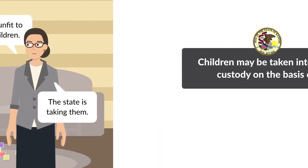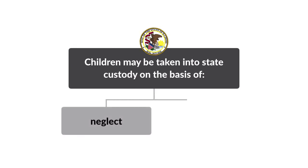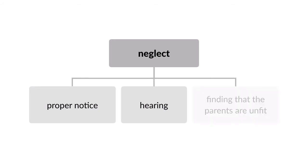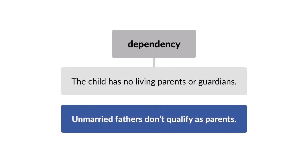Illinois law had processes in place to take children into state custody on the basis of neglect or dependency. For neglect, the state could remove a child from the parents following proper notice, a hearing, and a finding that the parents were unfit. Dependency removal was permitted if a child had no living parents or guardians. The dependency statute defined parents in a way that excluded unmarried fathers.